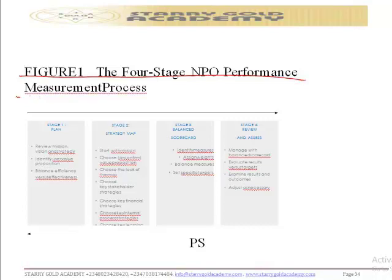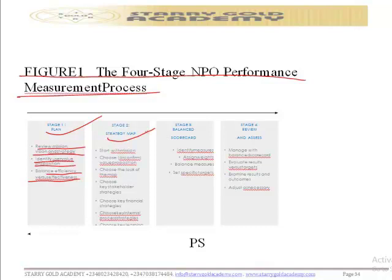There are four stages in the NPO performance measurement process. Stage one is the planning stage, where we review the mission, vision, and strategy, identify the user value proposition, and balance efficiency versus effectiveness. Stage two is the strategy map, where we start with the mission, choose the value proposition, the map layout, key stakeholder strategies, key financial strategies, and key internal process strategies. Stage three covers the balanced scorecard — identifying measures, assigning weights, balancing measures, and setting specific targets.